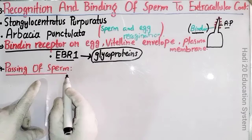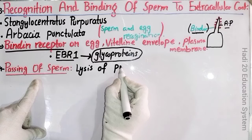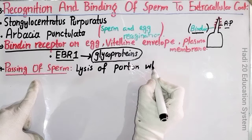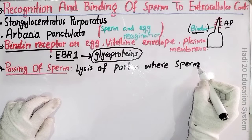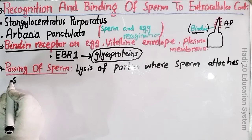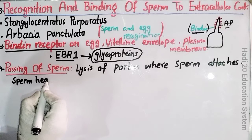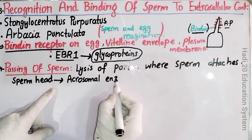جہاں پہ sperm نے attach کیا ہوگا، وہاں پر lysis کا process start ہو جائے گا — یعنی کہ اس portion کی lysis ہو جائے گی جہاں sperm attach ہوا ہے۔ جب وہ lysis start ہوگی تو dear friends جو acrosomal enzymes ہوں گے وہ sperm کے head region میں پائے جائیں گے، اور وہ acrosomal enzymes اس region پر release کر دیے جائیں گے۔ یہ acrosomal enzymes sperm کے گزرنے میں، یعنی passing میں، main role play کریں گے۔